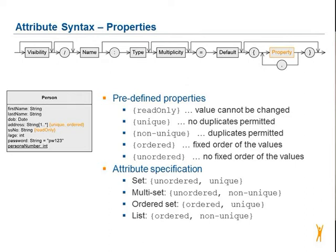Read-only is the right property if the value cannot be changed. Unique means that there are no duplicates. If duplicates are permitted, you can define the property as non-unique. The values can be defined as ordered or unordered. If the attribute specification should be a set, then it needs the properties unordered and unique.